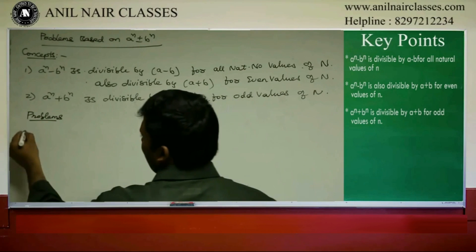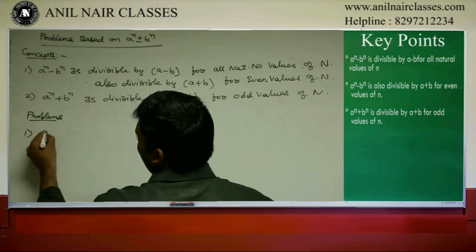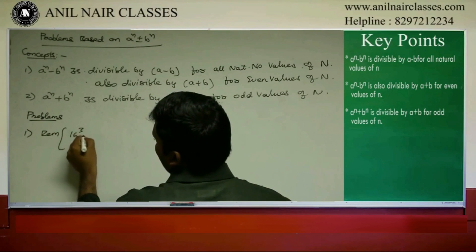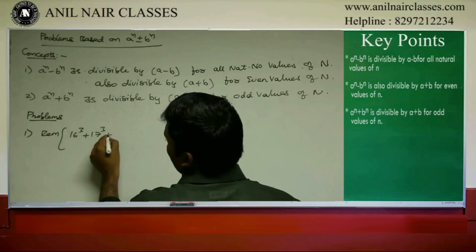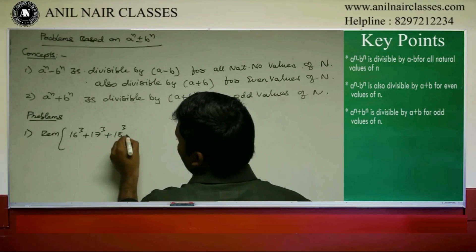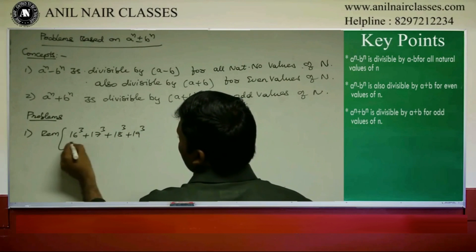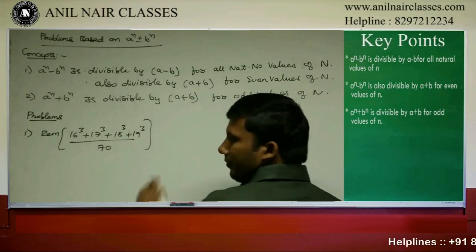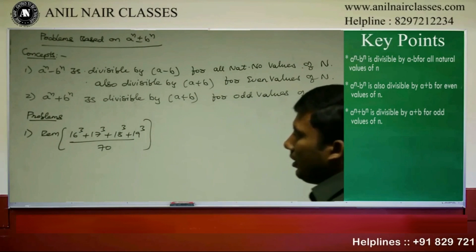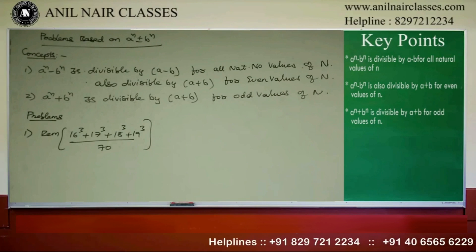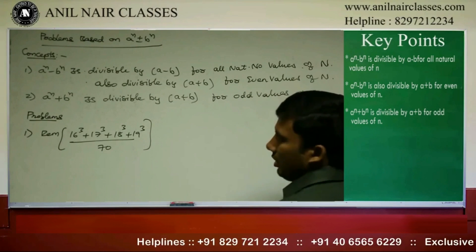Problem one — find the remainder: 16 power 3 plus 17 power 3 plus 18 power 3 plus 19 power 3 divided by 70.